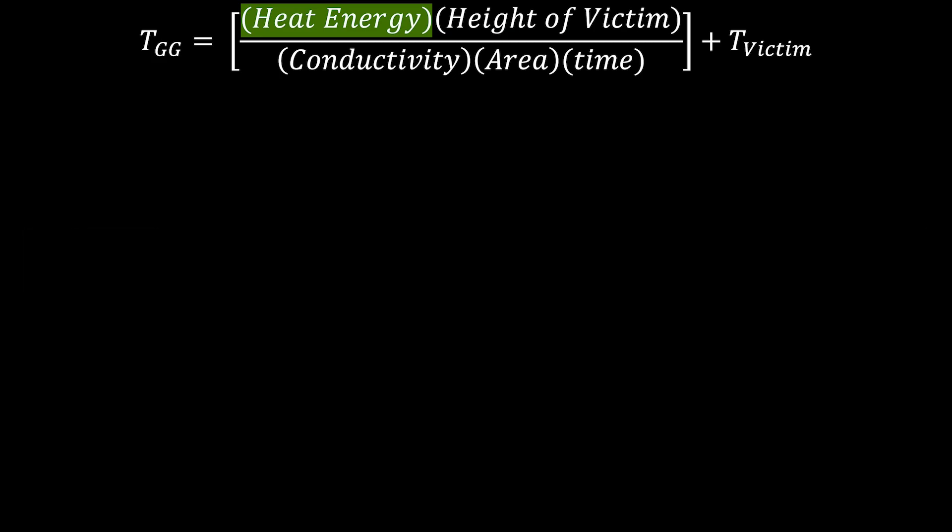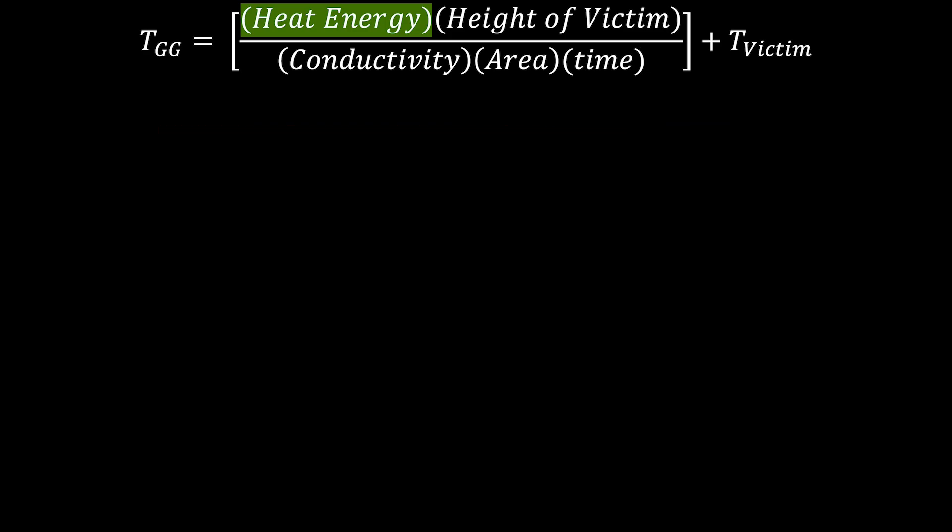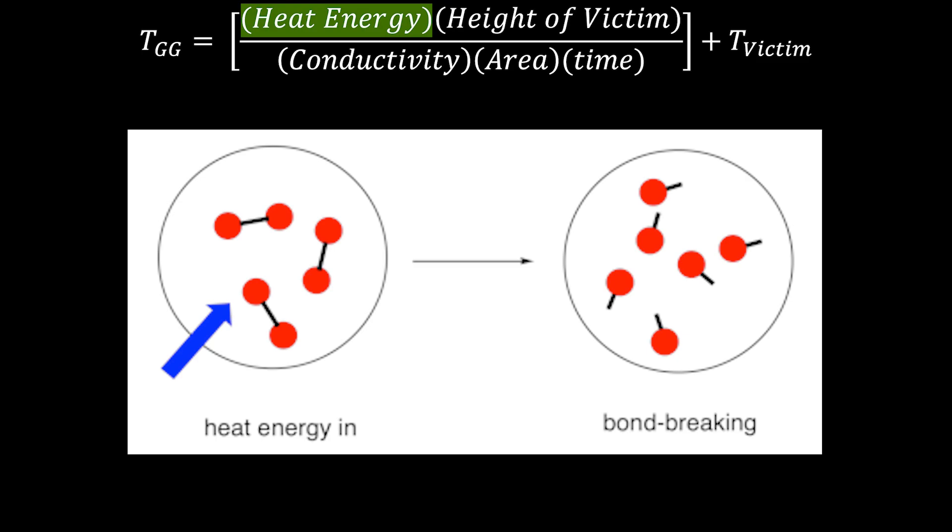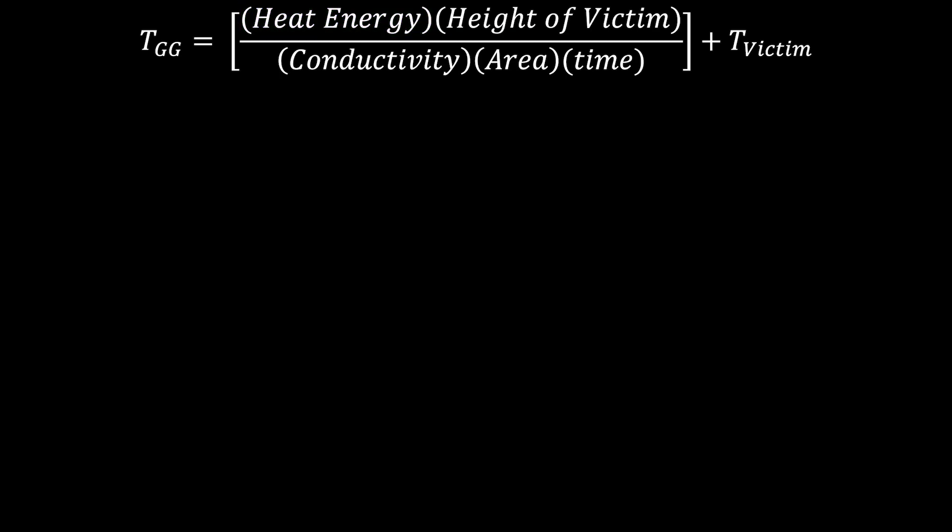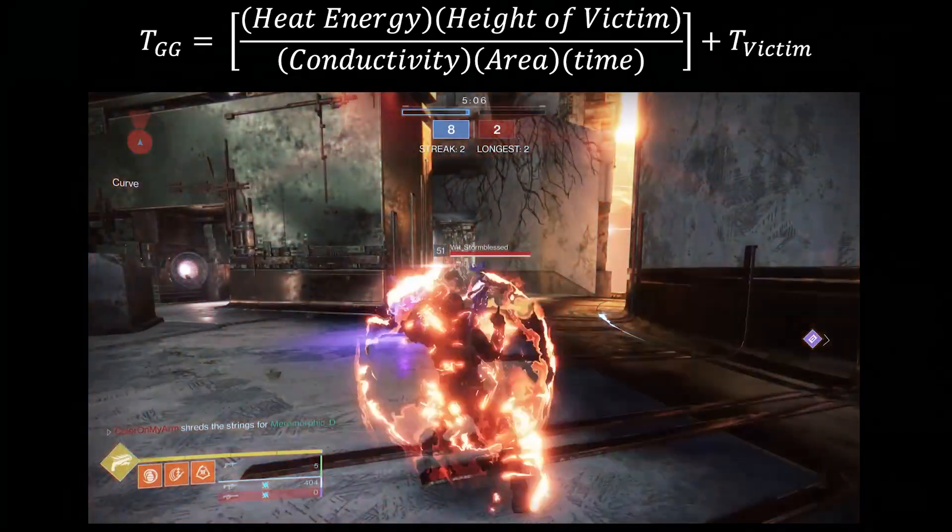One important thing to note here is that this isn't vaporization like we normally think of, like boiling a liquid. This is the complete dissociation of all the molecules that make up the body. So, all the molecular bonds would be broken, and everything would be separated into its elemental form. This requires a ton of energy to do, which is why the number is so high.